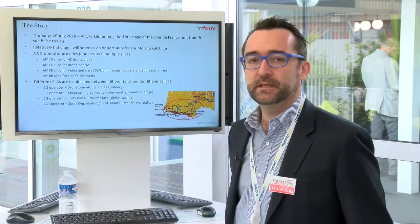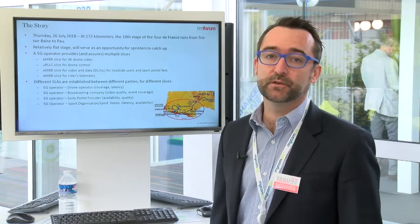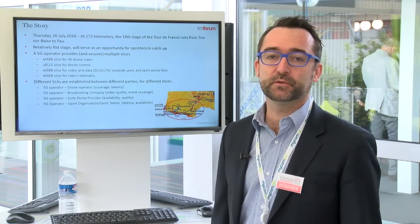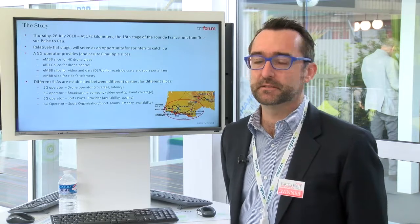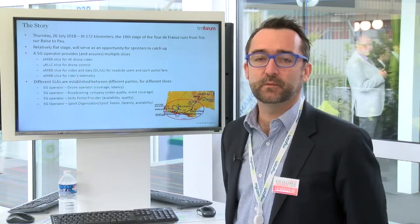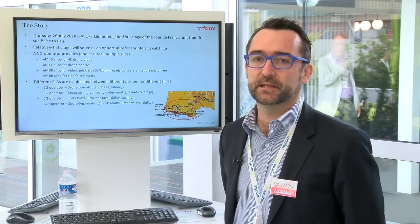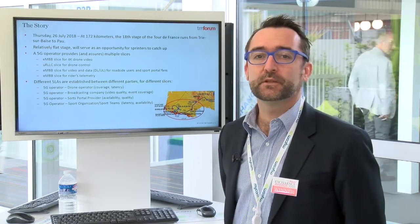We also have dedicated eMBB slices for subscribers on the side of the road. The idea is that 5G network slicing is used to guarantee QoS on these specific slices, while ensuring we are not degrading QoS on any of the other slices. Some other slices are also used for telemetry data, where sensors at the back of the riders' bikes provide information such as cadence, speed, and so on.